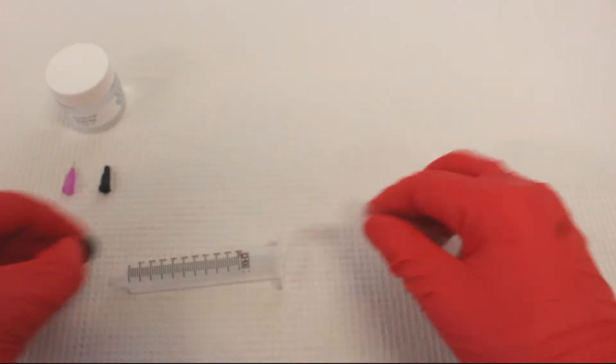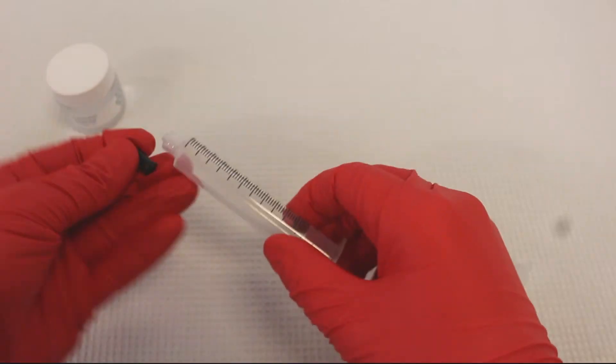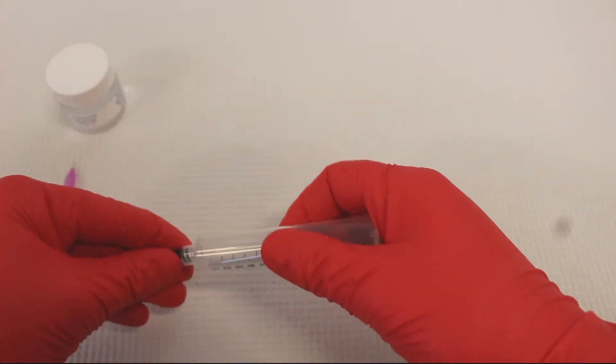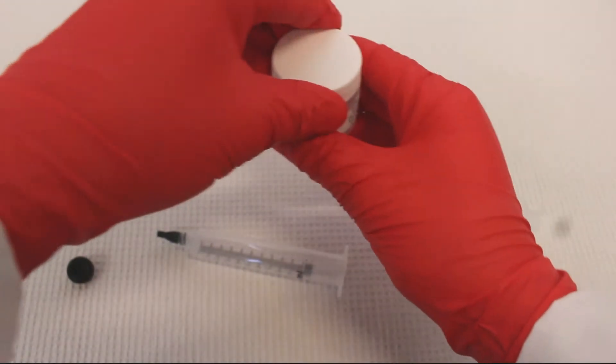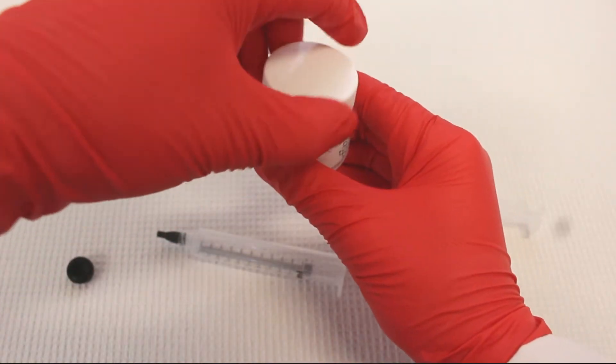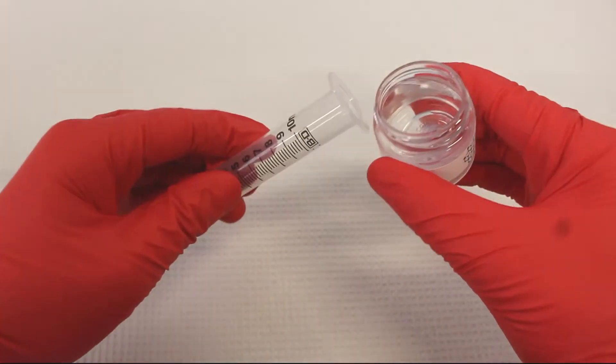First remove the plunger from the syringe and the black stock from the plunger. Add a syringe cap to the syringe. Then pour pleuronic into the syringe. We suggest loading about 3 to 5 mils.